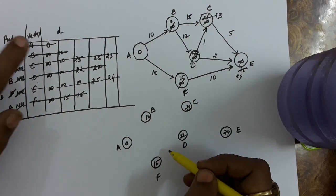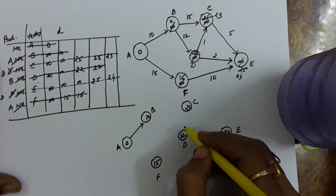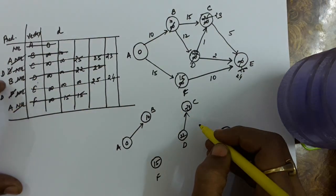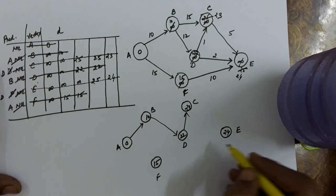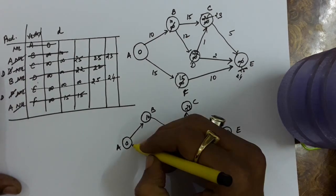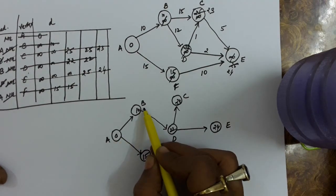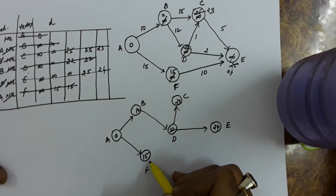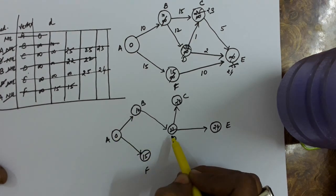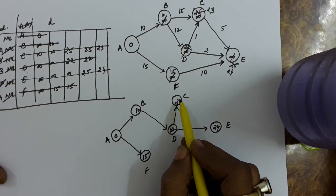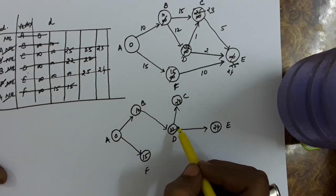The predecessors tell you the path to follow. A has predecessor nil. B has predecessor A, so there is an edge A-B. D has predecessor B, so there is an edge B-D. C has predecessor D, so there is an edge D-C. E has predecessor D, so there is an edge D-E. F has predecessor A, so there is an edge A-F. So if you have to go from A to B, the minimum distance is 10. A to F minimum distance is 15. If you have to go to D, the path is A-B-D. If you have to go to C, the path is A-B-D-C. If you have to go to E, the path is A-B-D-E. This way we have found the shortest distances and the paths to follow.